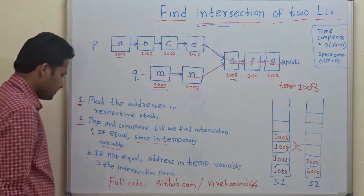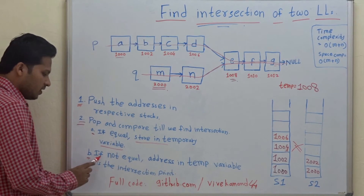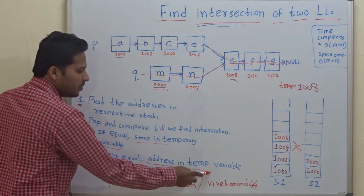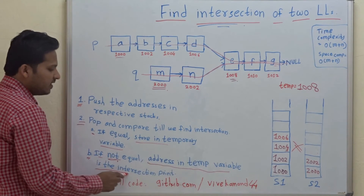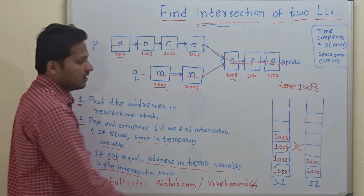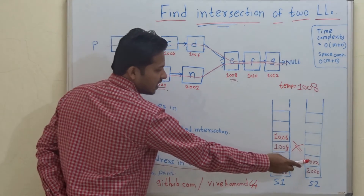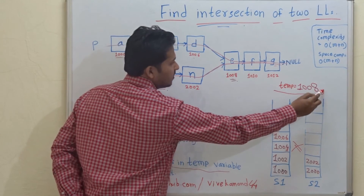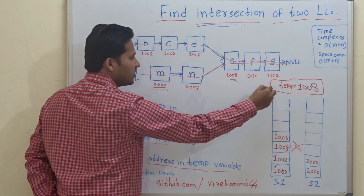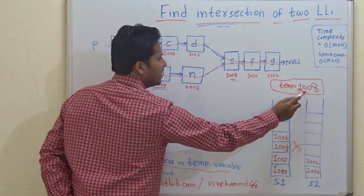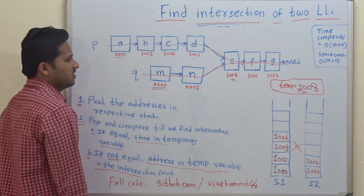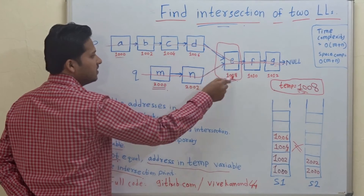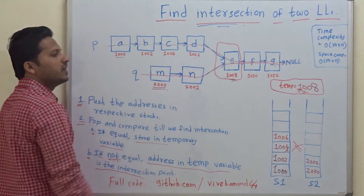Step B says: if the popped addresses are not equal, then the address in the temporary variable is the intersection point. Since 1006 is not equal to 2002, the last address stored in the temporary variable — 1008 — is the intersection point of the two linked lists.